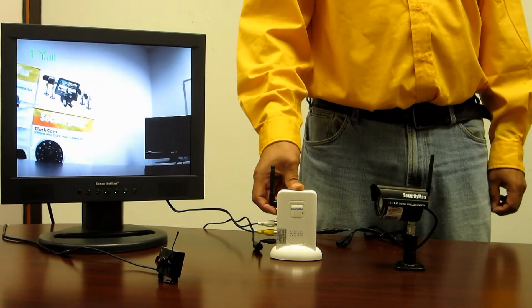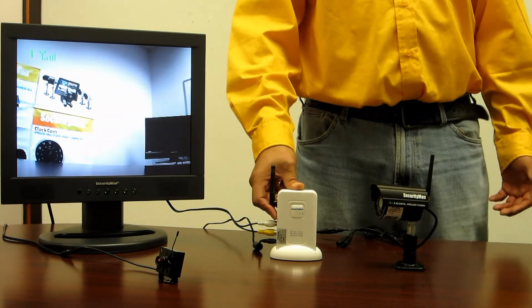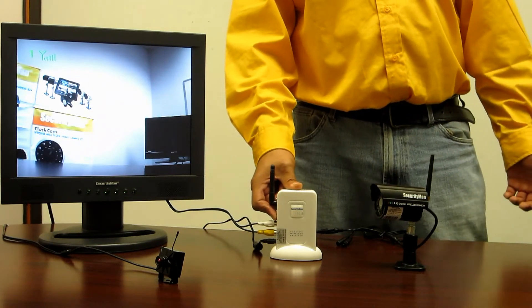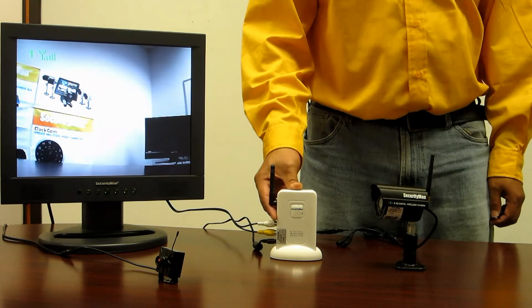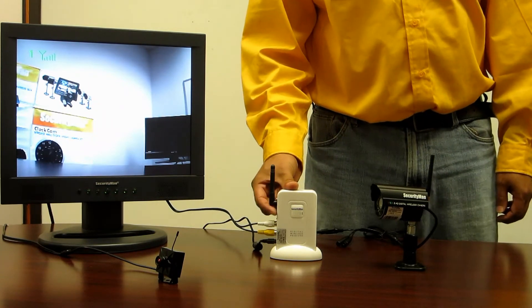I've already paired four cameras to the receiver, so now I'm going to demo how easy it is to go to each camera. From camera 1, what I'm going to do is press the channel button located at the side of the receiver to get to channel 2.